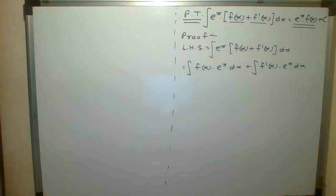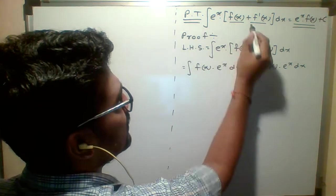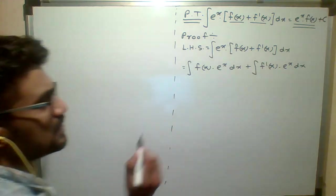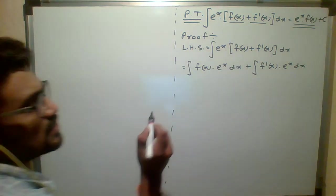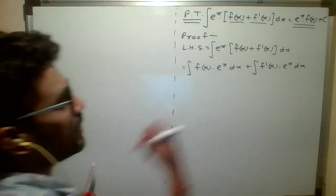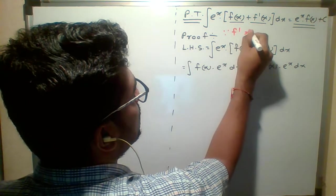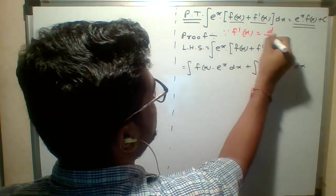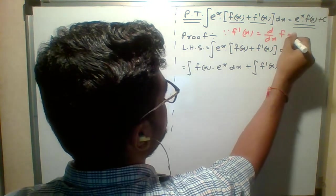So I have taken left-hand side. What is in the left-hand side? e raised to x bracket f of x plus f dash of x. Students, what do you mean by f dash of x? Yesterday I told you that f dash of x means d by dx of f of x. You remember that.